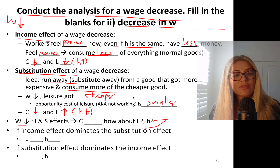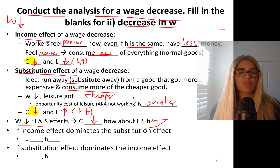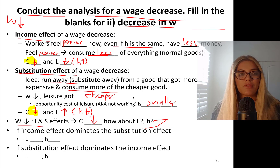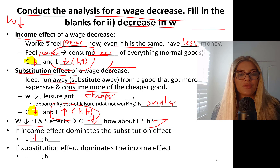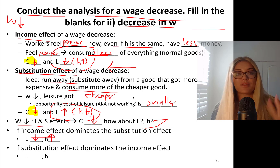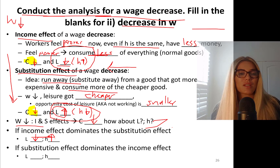So, wages go down. Both income and substitution effects say consumption goes down. How about leisure and hours of work? If income effect dominates, income effect says leisure goes down and hours go up. Substitution effect is telling you leisure goes up, but income effect dominates — so leisure goes down, hours go up. If substitution effect dominates, leisure goes up and hours go down.